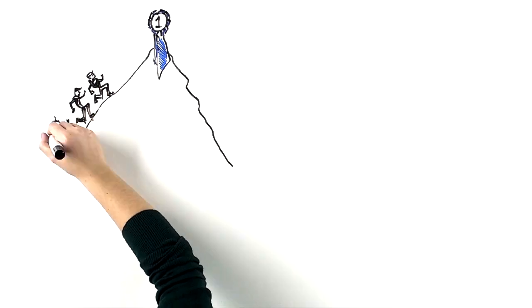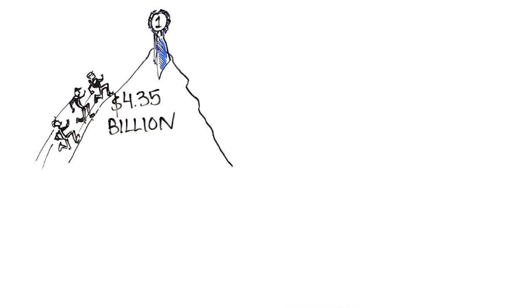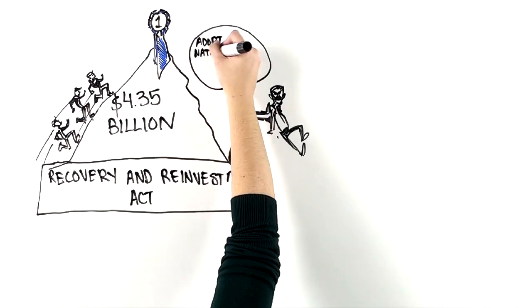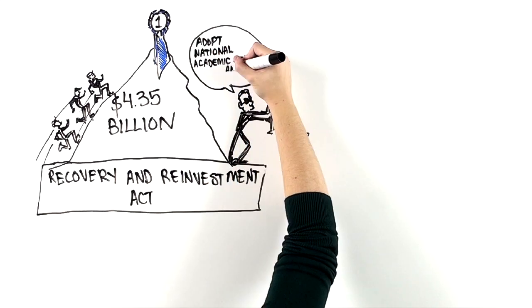Then there's Race to the Top, funded at $4.35 billion, a federal competitive grant program that was part of the Recovery and Reinvestment Act. The key to the program was that states were encouraged to adopt national academic standards and assessments.